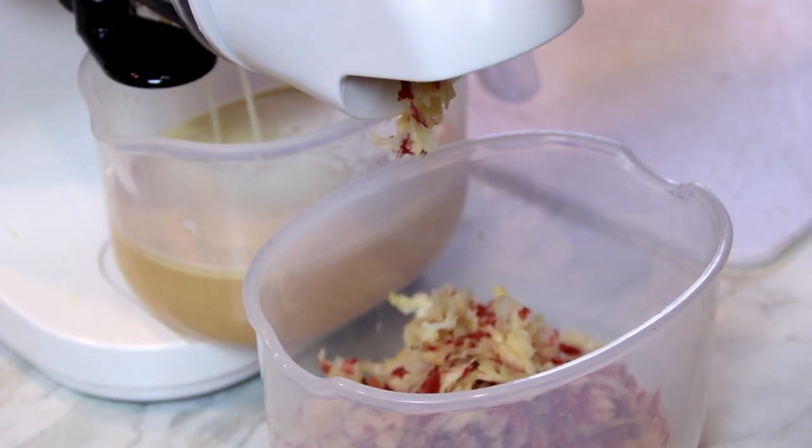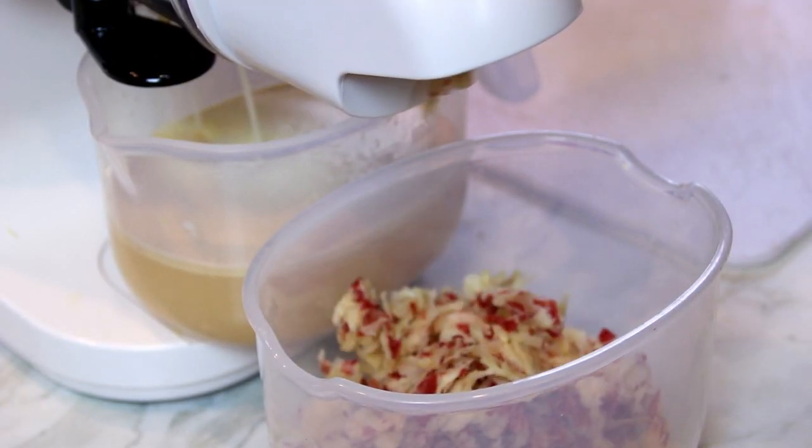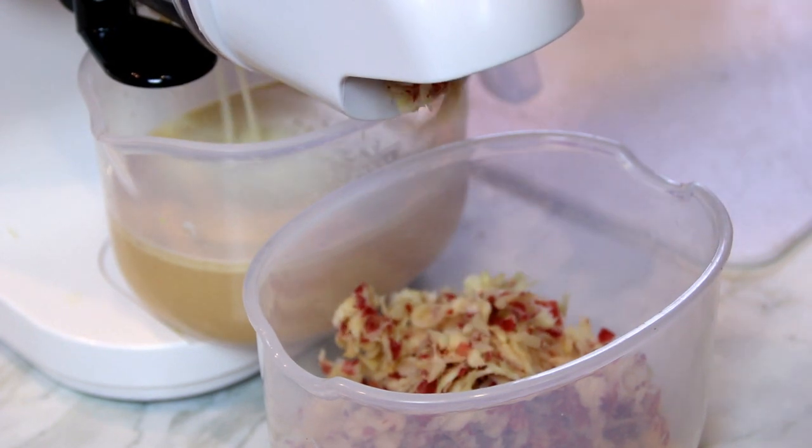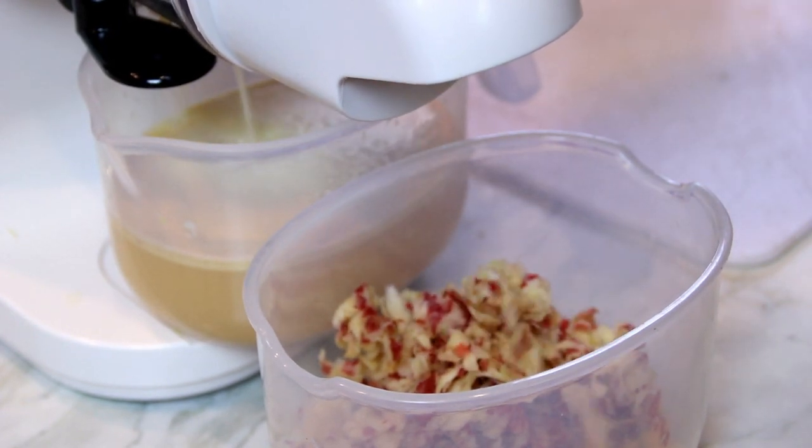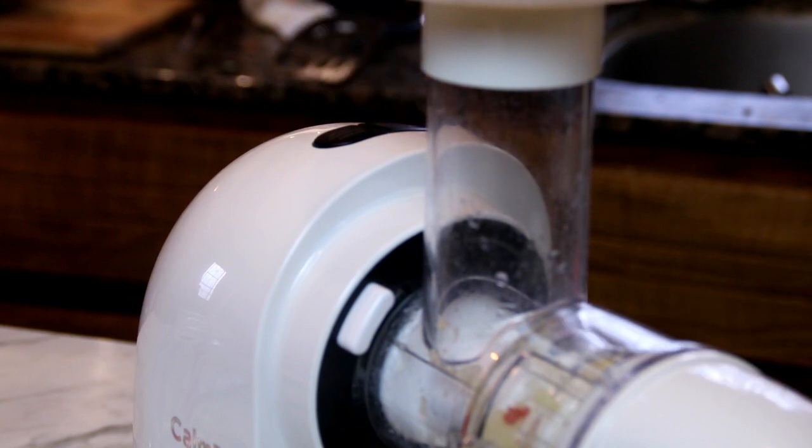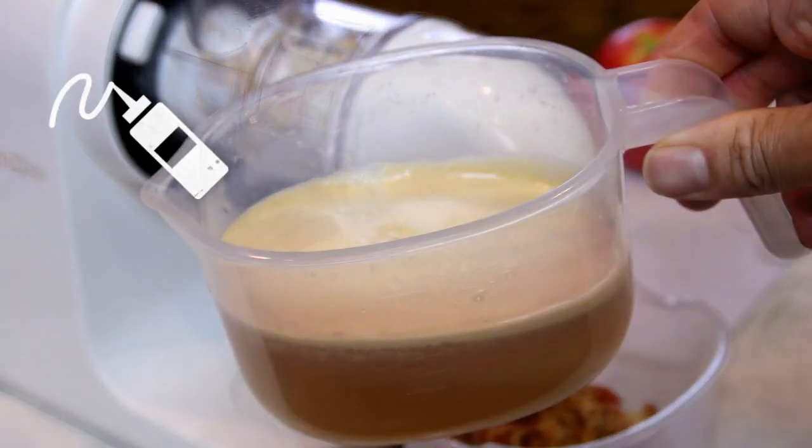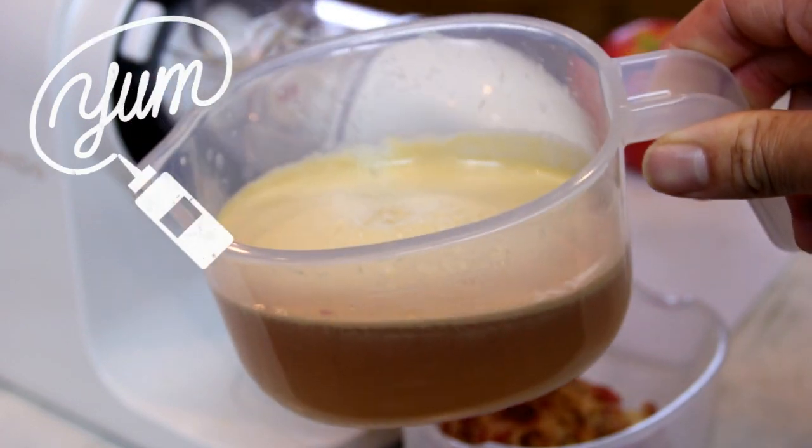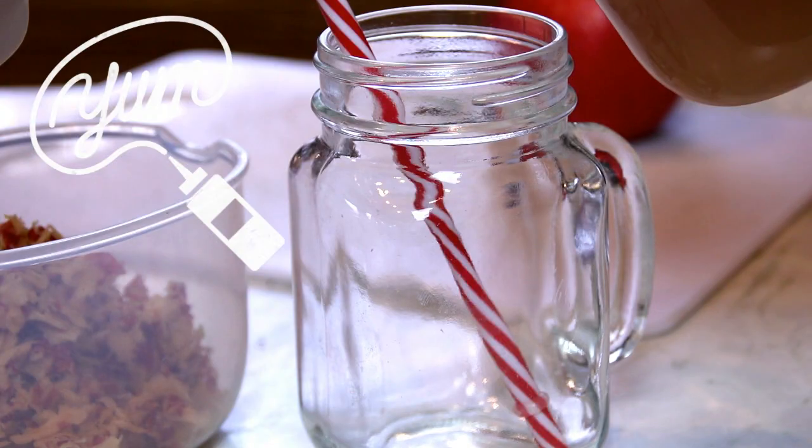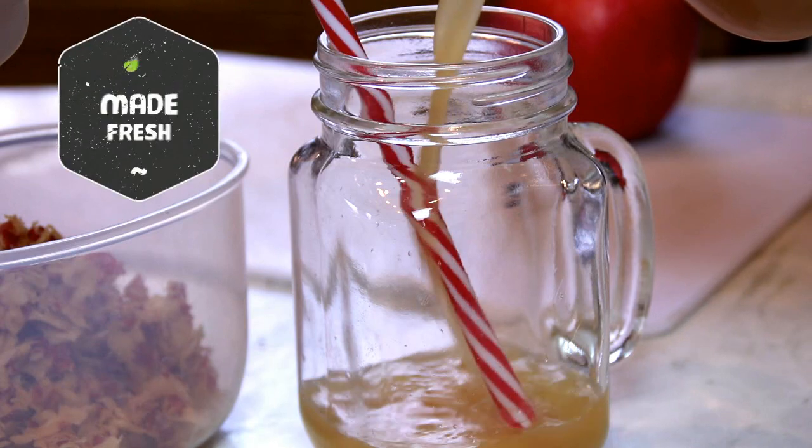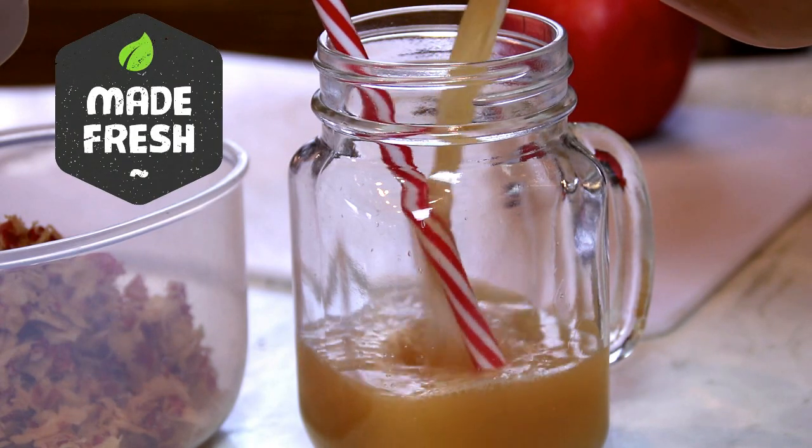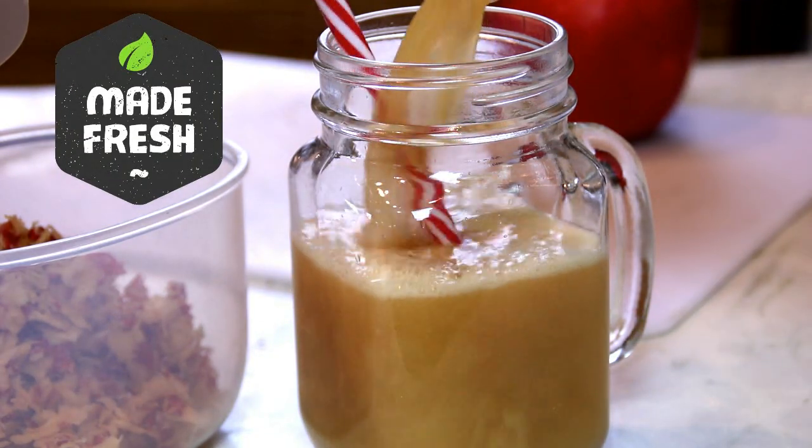As you can see, all the peels are coming out in the sludge. You might be able to use this for something, I'm not sure what. I'm going to turn this off. Look how much juice we've got from two fairly sweet apples. I'm going to pour this into a glass and put some ice into it.